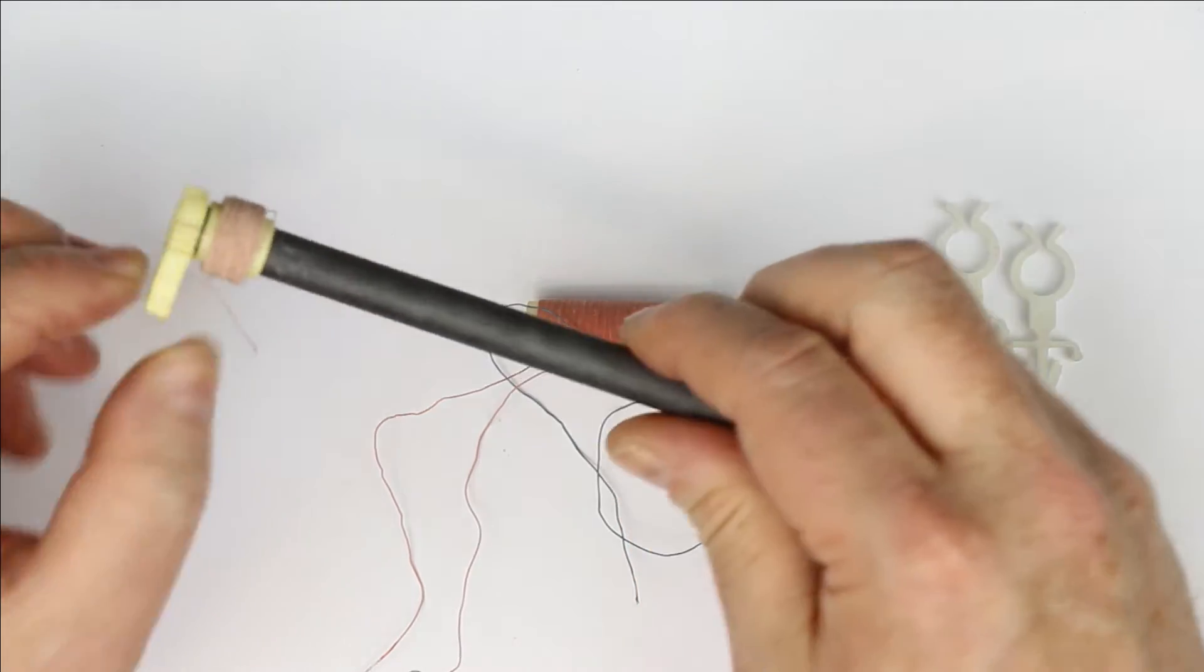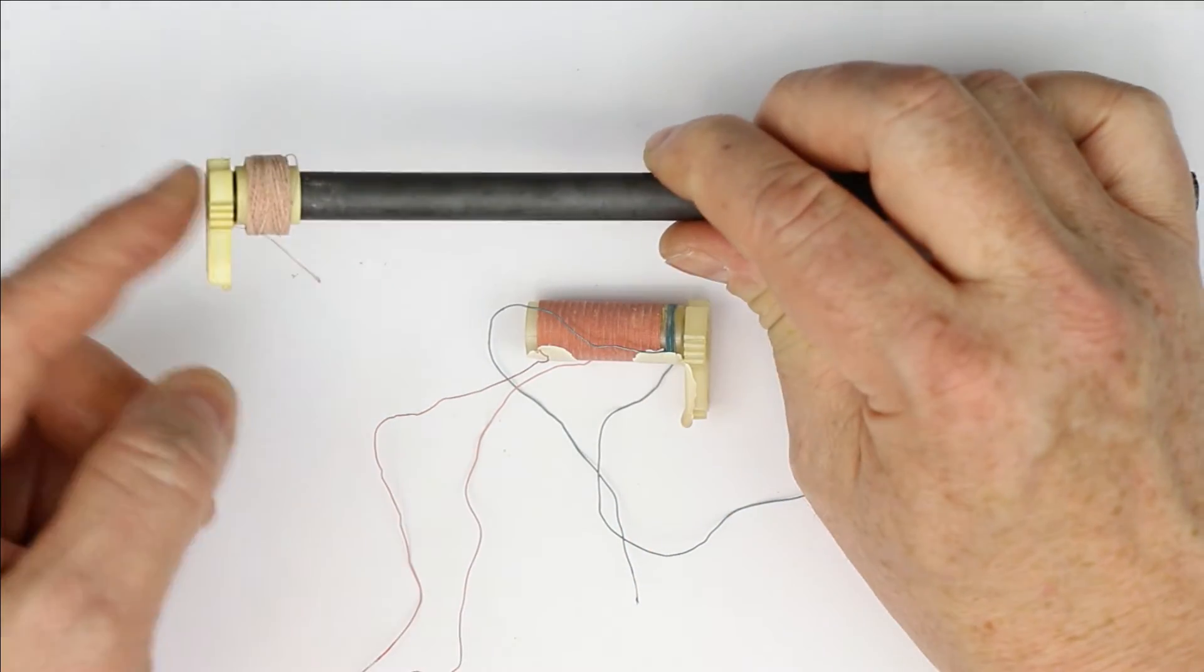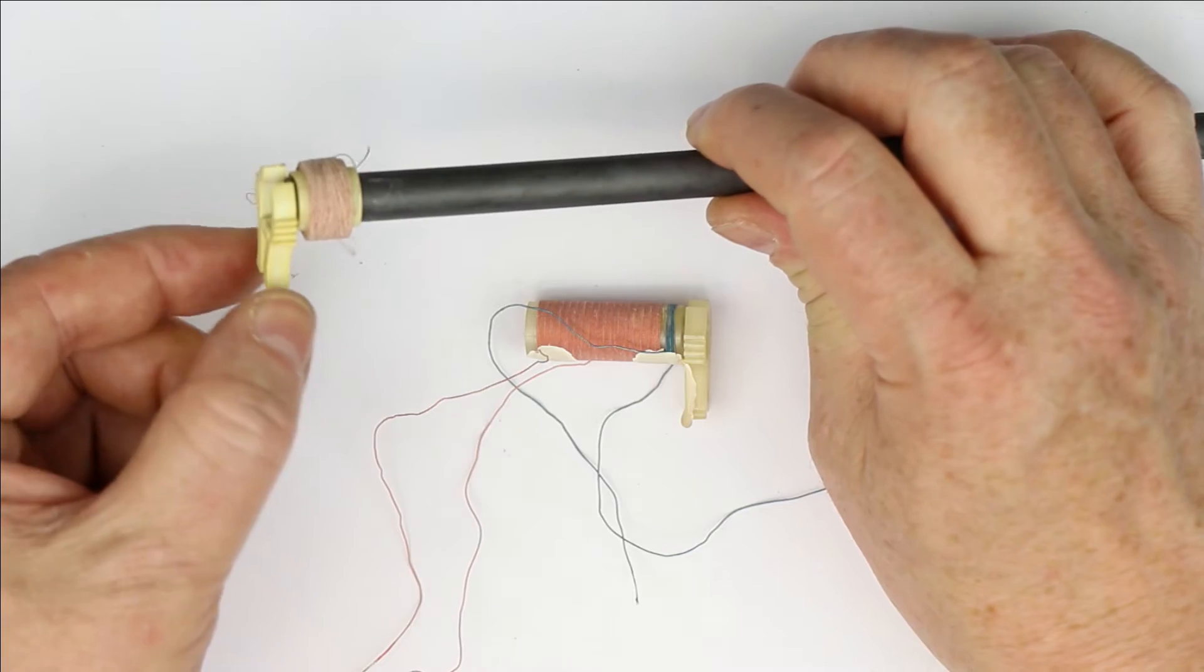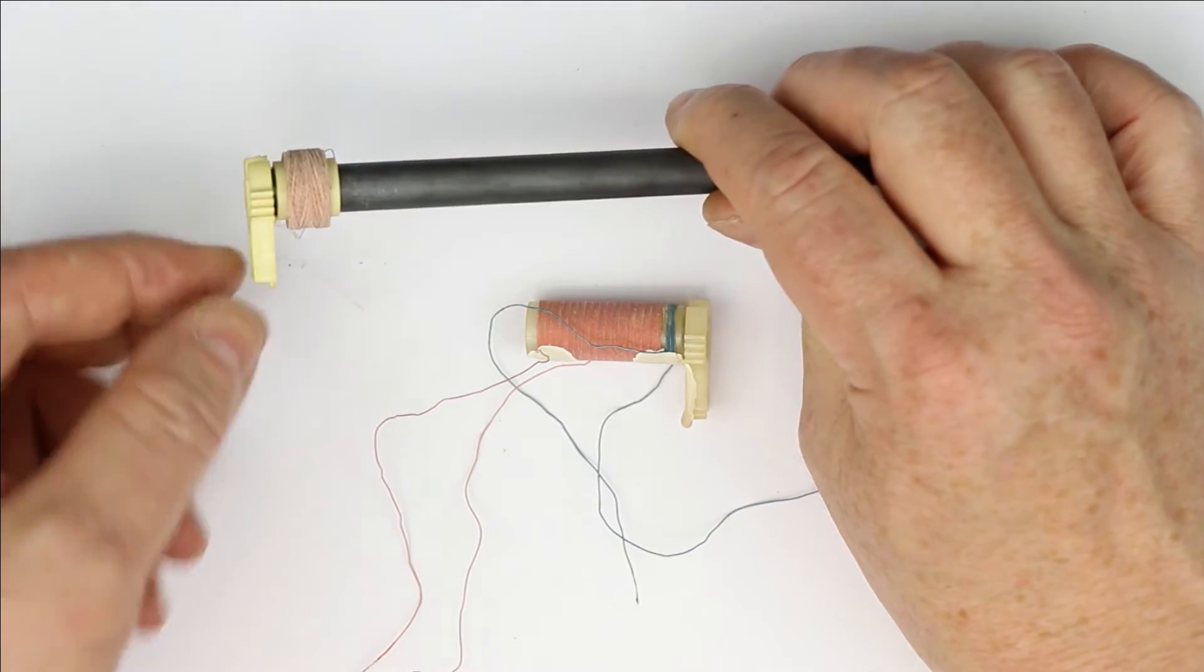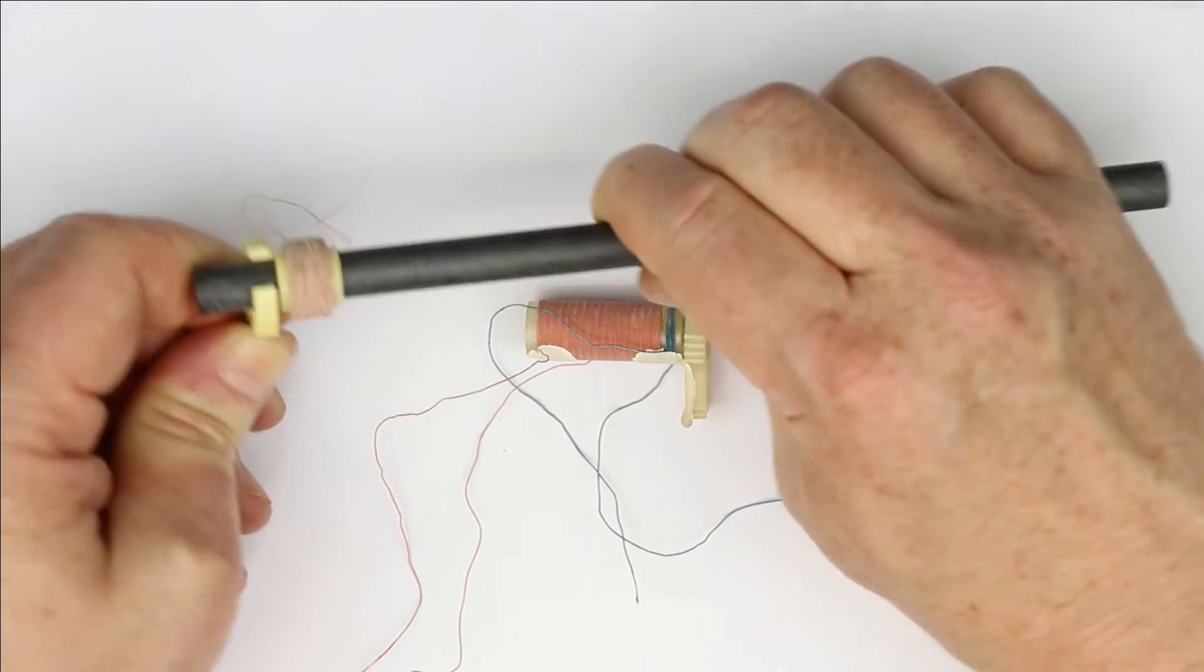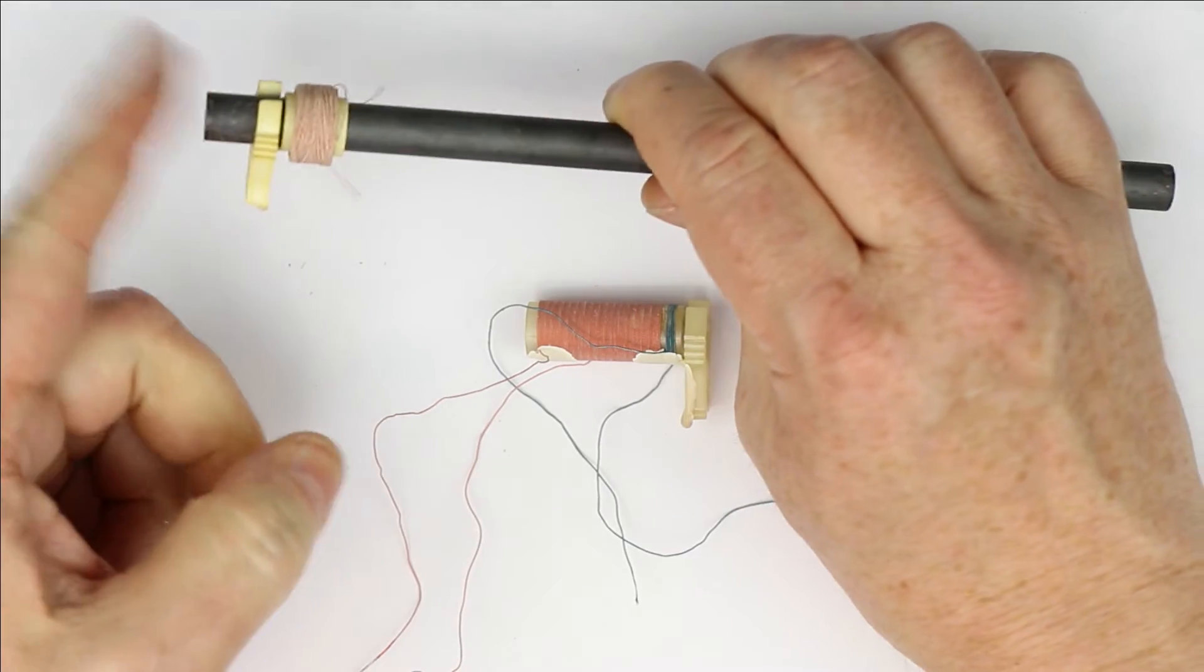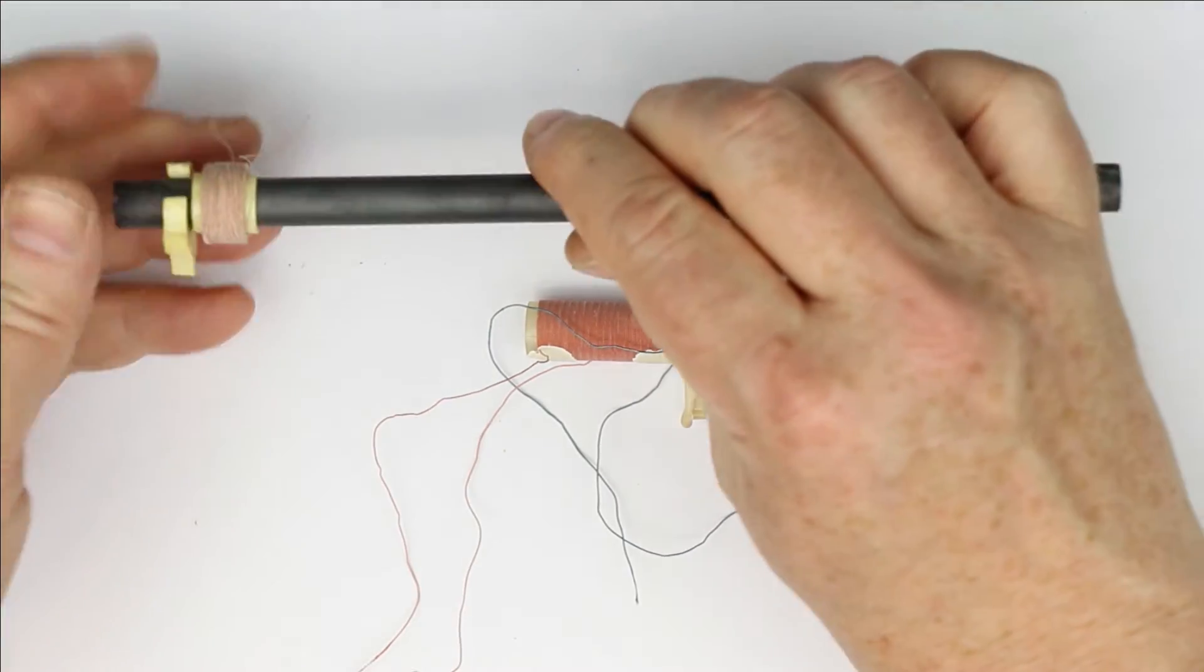It's a bit fiddly to put it onto the ferrite rod. You have to press these two tabs together and then it will get over onto the ferrite rod.